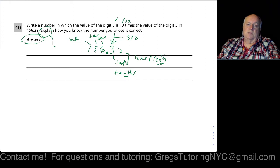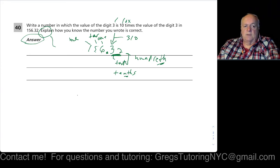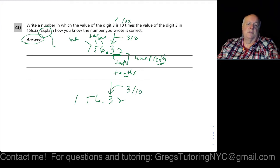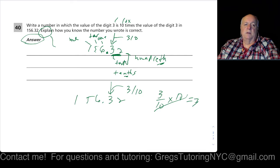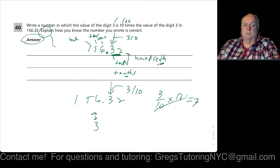The columns are: tens, ones, then the decimal point, then tenths, hundredths. So the 3 in 156.32 is three tenths. The question asks for a number where the digit 3 has ten times that value. Ten times three tenths — the tenths cancel — equals 3. So we need a number where the digit 3 is in the ones column.